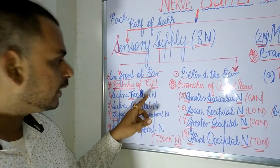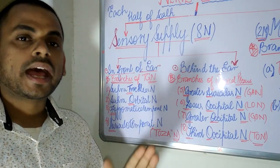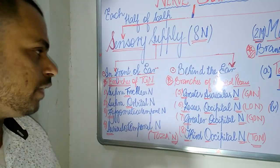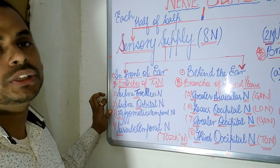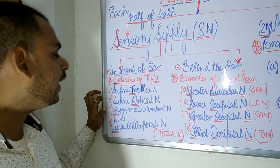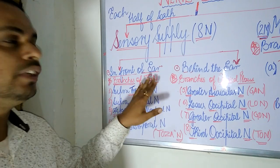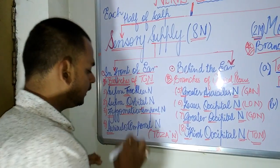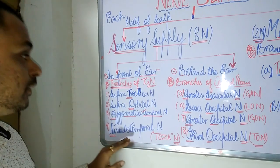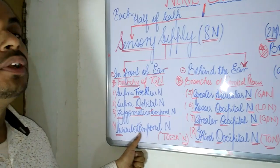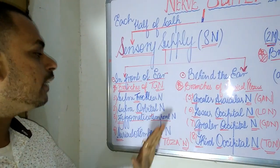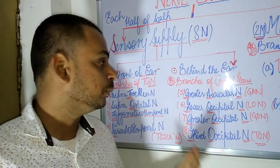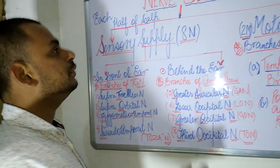The first nerve in front of the ear is the supratrochlear nerve, lying adjacent to the supratrochlear artery and vein. Next is the supraorbital nerve, adjacent to the supraorbital artery and vein. Then comes the zygomaticotemporal nerve, and finally the auriculotemporal nerve. These four nerves lie in front of the ear and provide sensory supply to the scalp.